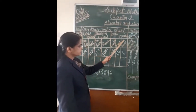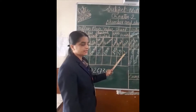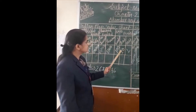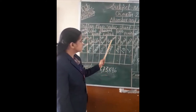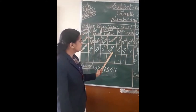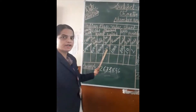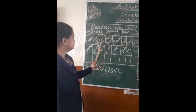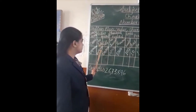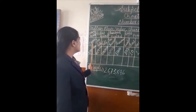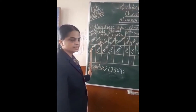Here in ones we write only a single digit, tens is two digits, hundreds is three digits, thousands is four digits, ten thousands is five digits, lakhs is six digits, ten lakhs is seven digits, and in crores it is eight digits.